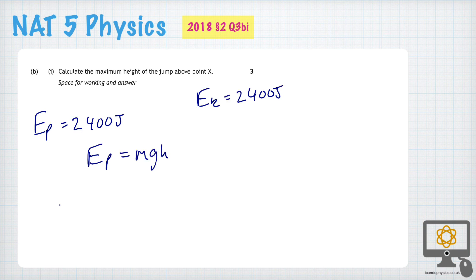So we plug the numbers into the formula. The potential energy lost by the bicycle is 2400. That's equal to the mass of the cyclist, which the question tells us is 75. The gravitational field strength is 9.8, and the height, which is what we're trying to find out.